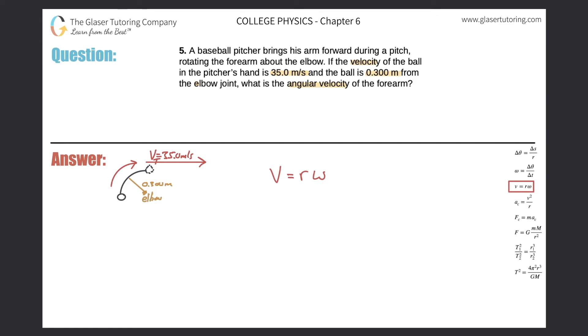This is 35.0 equals the radius of 0.3 times omega. Just divide out the 0.3 from both sides, and omega is simply 35 divided by 0.3.